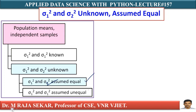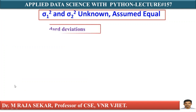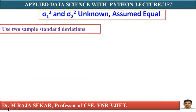In this particular concept, we have a few assumptions. First, samples are randomly and independently drawn. Second, populations are normally distributed. Third, population variances are unknown but assumed to be equal. We use two sample standard deviations and pool them to get Sigma — that is how we will proceed.